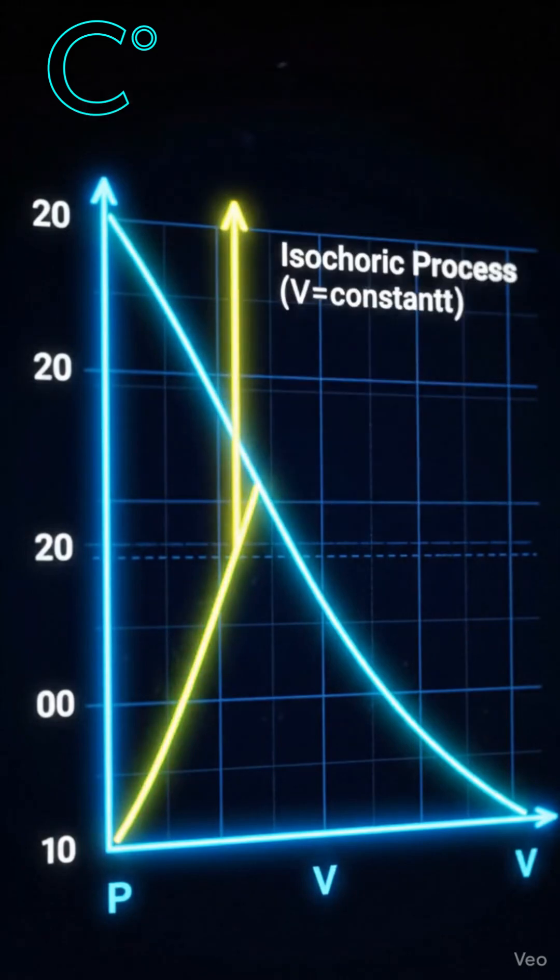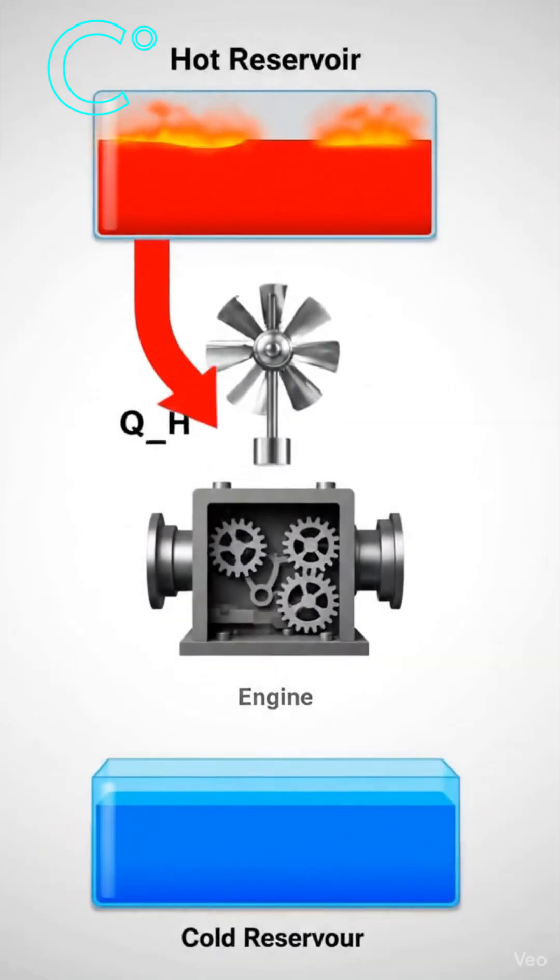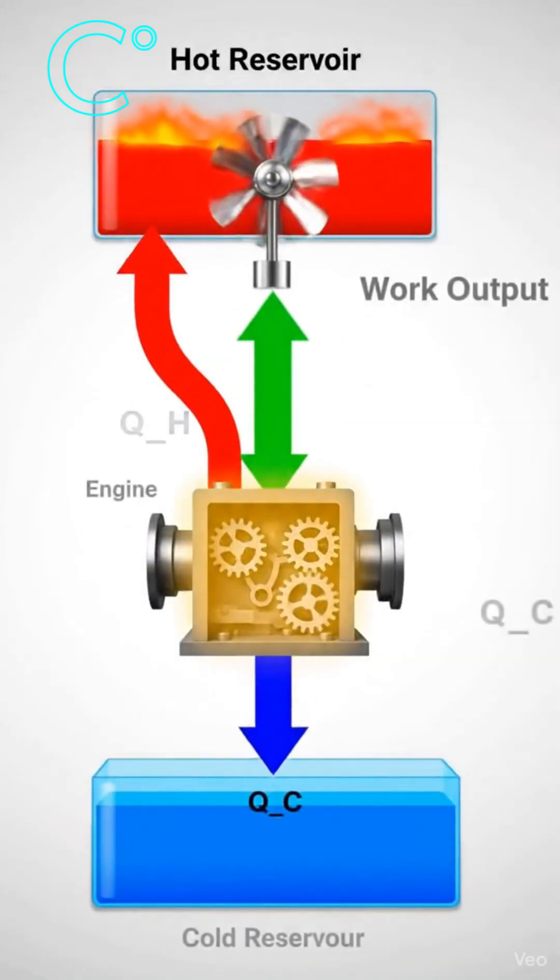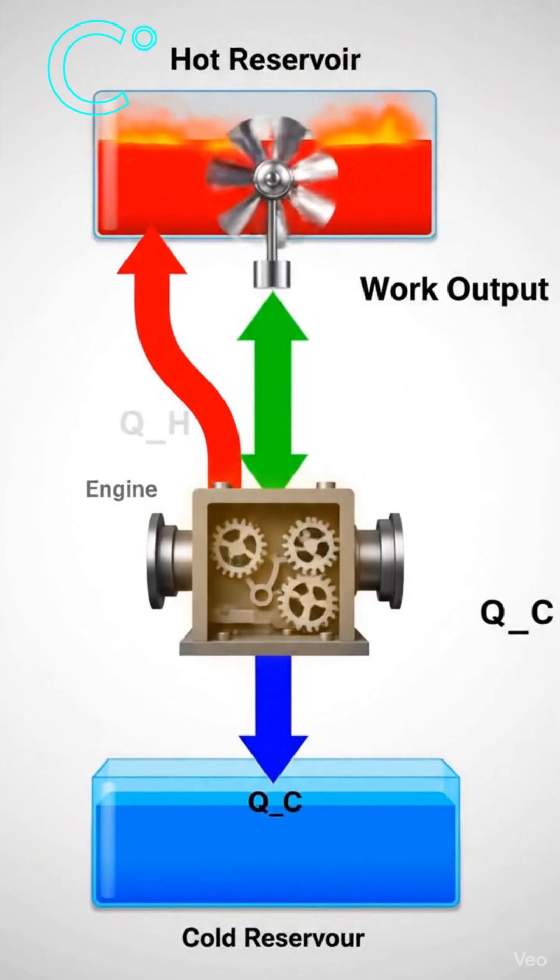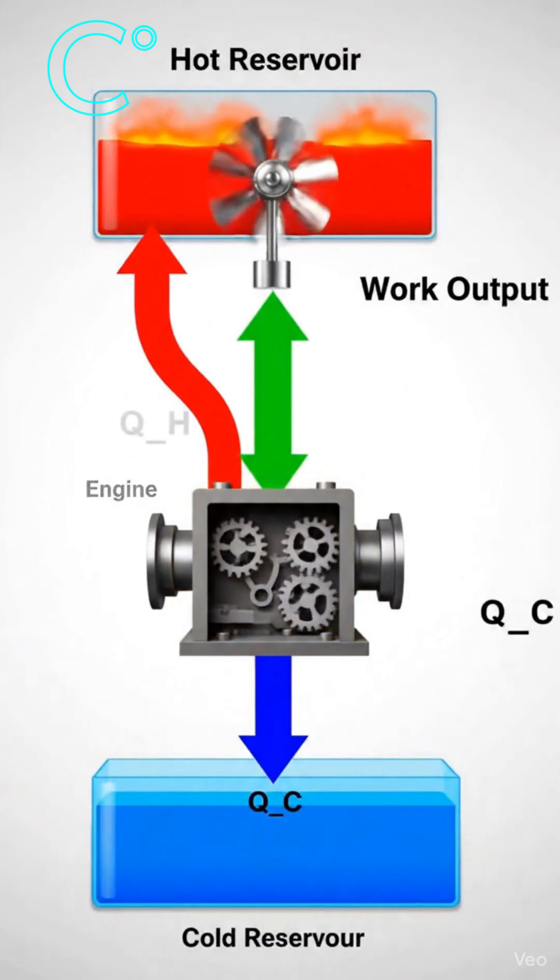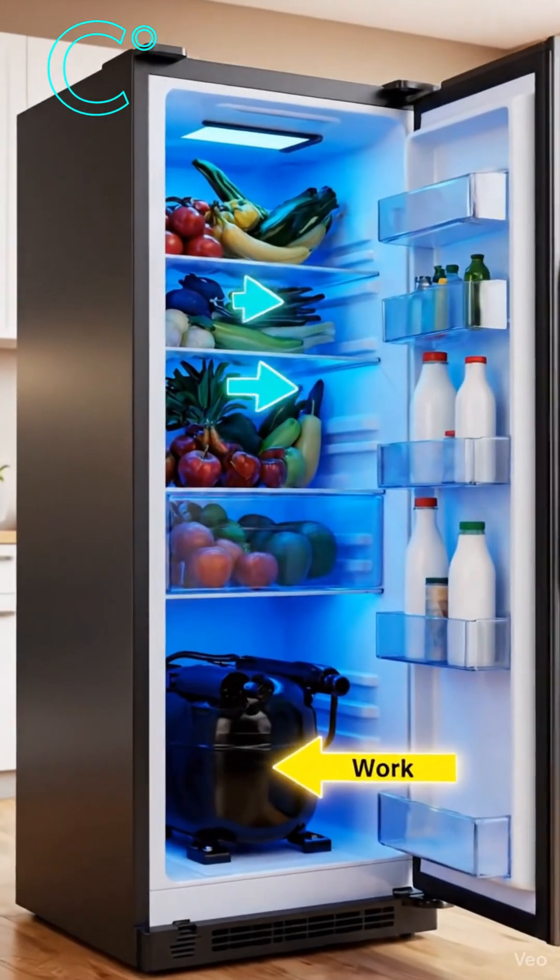An isothermal process has constant temperature. An adiabatic process has no heat transfer. An isobaric process has constant pressure. And an isochoric process has constant volume.